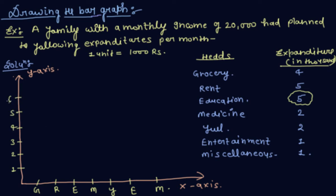Now for the graph: grocery expenditure is 4,000, so this is for grocery. Rent is 5,000, so this is for rent. Education is also 5,000, equivalent to rent.